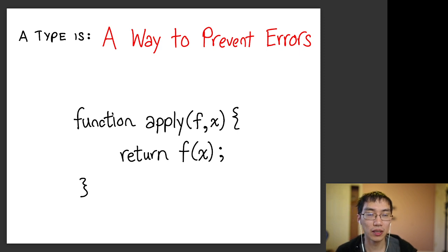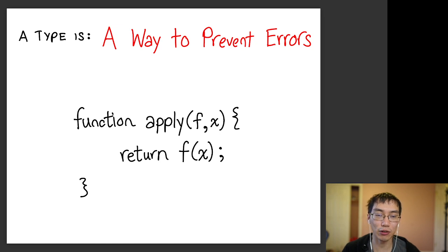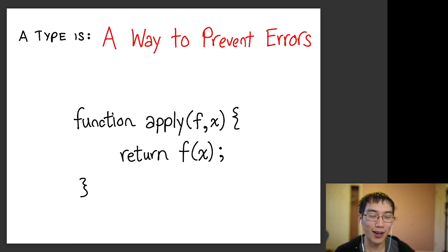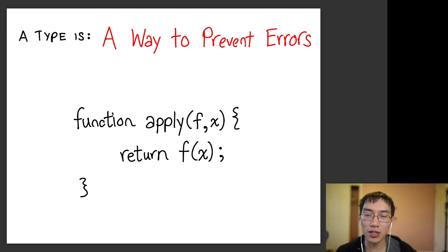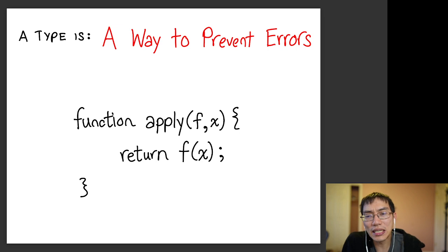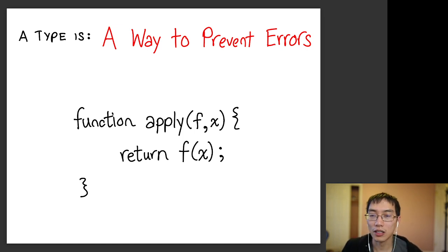Preventing errors is handy when types get complicated. For example, a higher-order function that takes a function and a value and applies one to the other — the type system can tell you the argument type of the function must match the value you pass in. And even without higher-order functions, imagine a function taking three boolean arguments: which is which? If they're just booleans you can mix up the ordering, but with distinct types for each parameter you'd get a type error if you passed the wrong one.